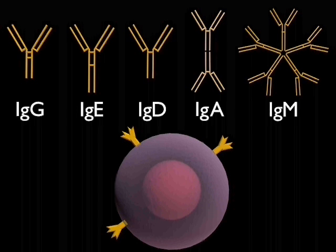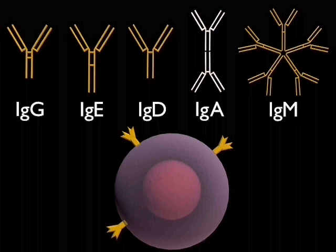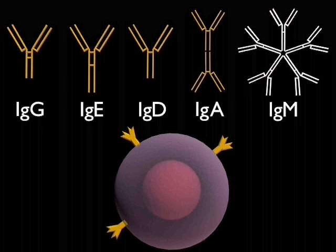The secreted form of IgA is a dimer of the basic four-chain structure, and IgM is a pentamer.